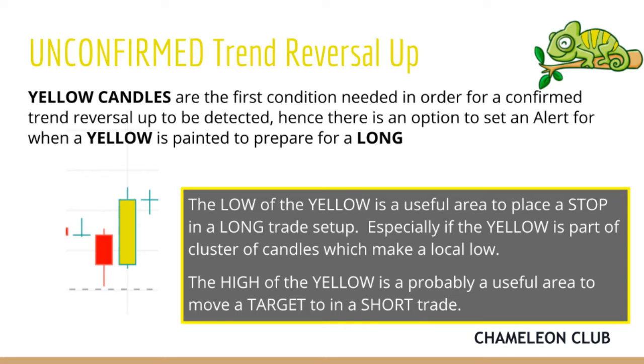As we saw in the last episode, yellow candles provide dynamic and original stop placeholders, but they also can be used as a target for a short.